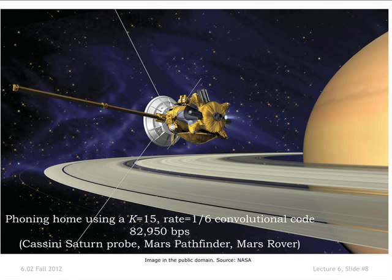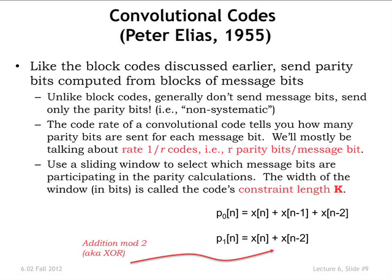Convolutional codes — Peter Elias was on our faculty here and in a short paper in 1955 invented the idea of convolutional codes. The idea is not to divide up your data into blocks, but to actually work on the streaming data. As the data goes past, you generate parity bits at a regular rate. In most typical schemes, you transmit just the parity bits, not the message bits — so this would be a non-systematic code.